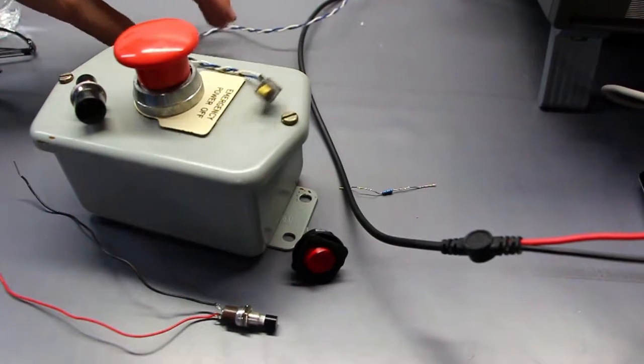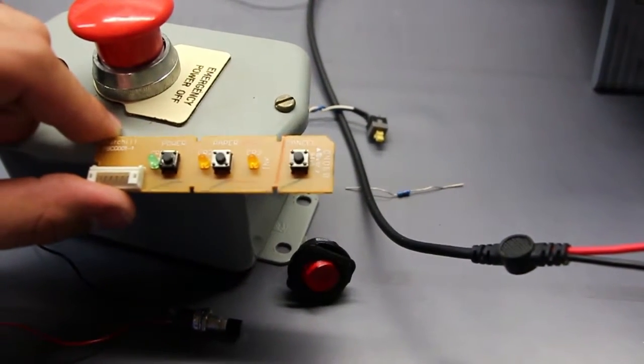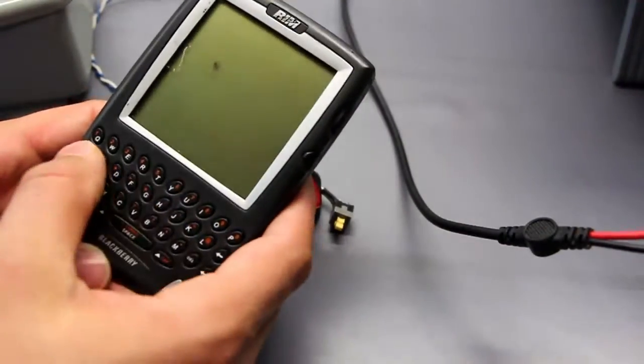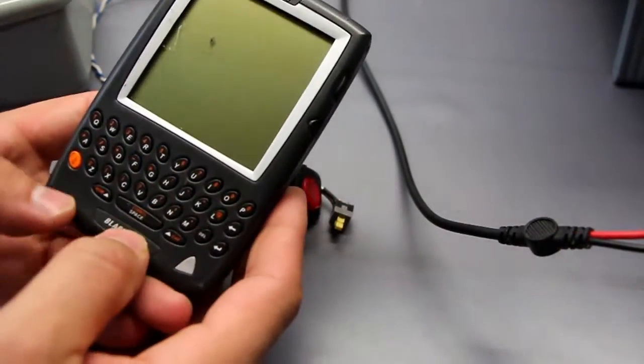It occurs in all sorts of switches. All switches have it, whether it's a rocker switch, whether it's a spring-loaded switch. This type of switch is in these type of BlackBerry phones. Main electronics use them as well, and bouncing occurs in all of them.